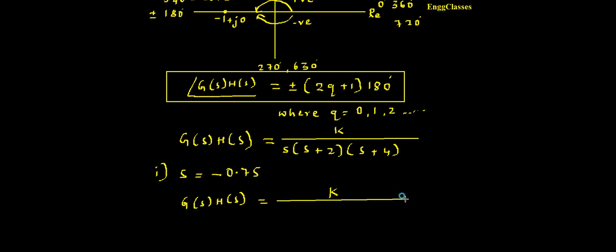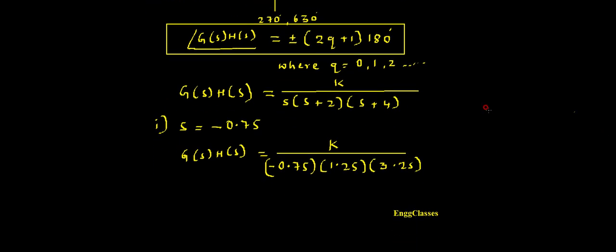For s = -0.75: s = -0.75, s+2 = -0.75+2 = 1.25, and s+4 = -0.75+4 = 3.25. The angle of k is 0 because there is only a real part with no imaginary part.